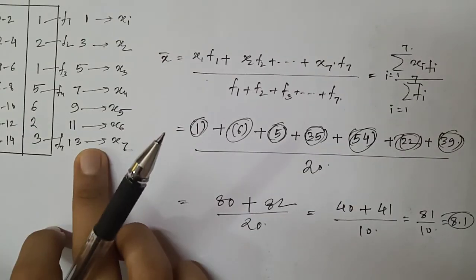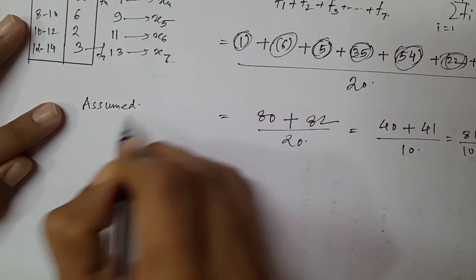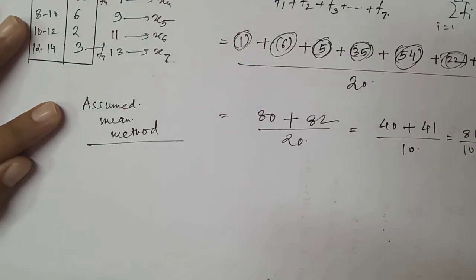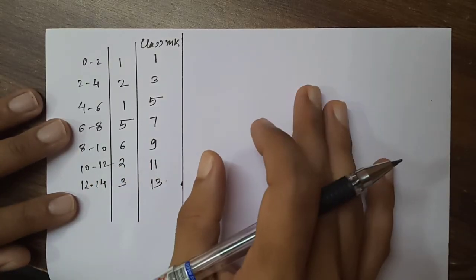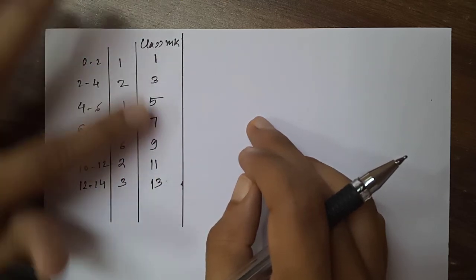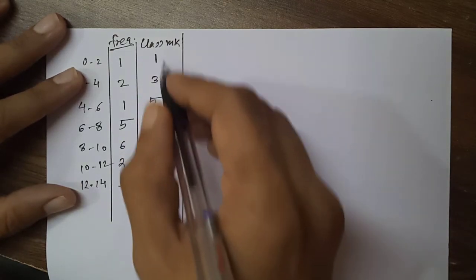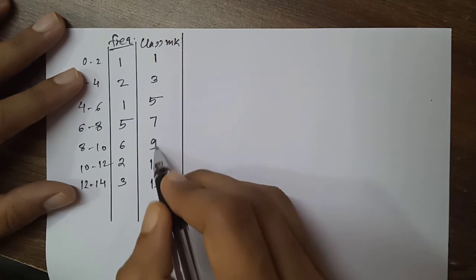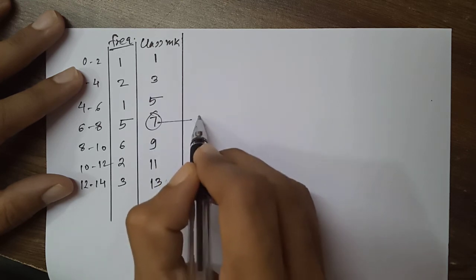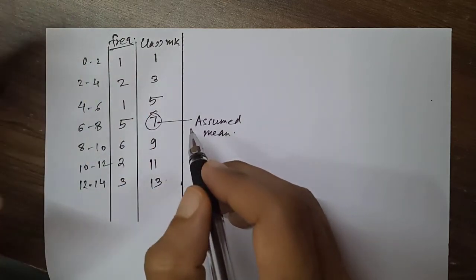Now we will find the mean of this same data using the assumed mean method. In the assumed mean method, we use the class mark values and frequencies as before. The class marks are 1, 3, 5, 7, 9, 11, 13. The middle-most value here is 7, so we consider 7 as the assumed mean.